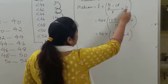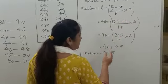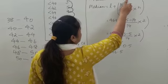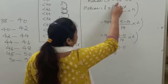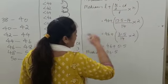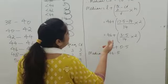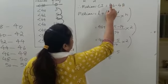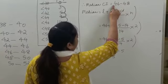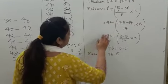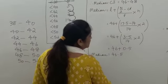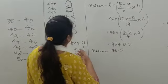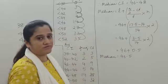And h is the width of the median class interval: 48 minus 46 equals 2. Since the class intervals are continuous, the width is simply the difference between the upper and lower limits. Substituting all values into the formula and simplifying, the median of this data is 46.5.